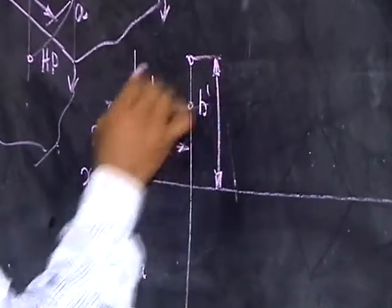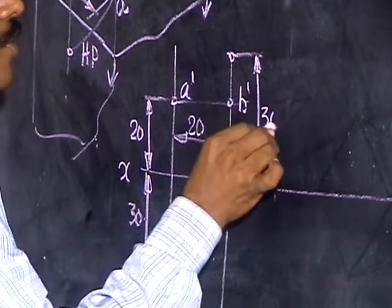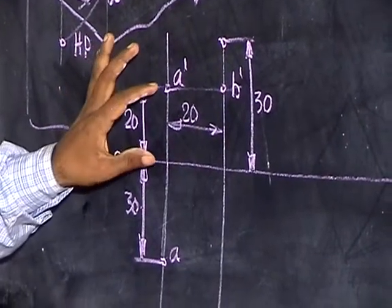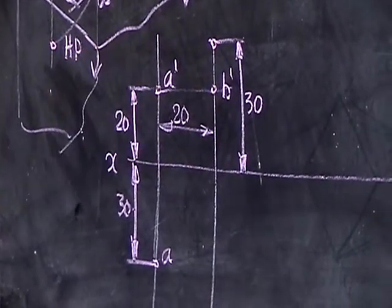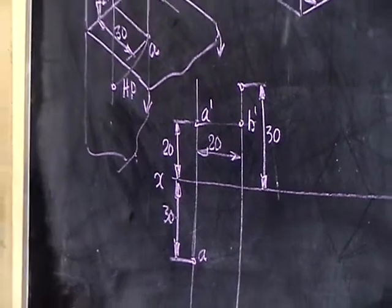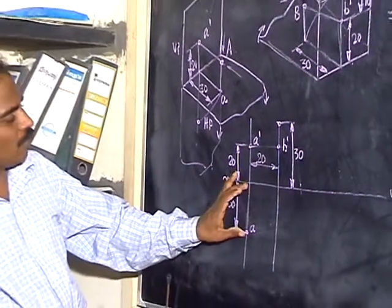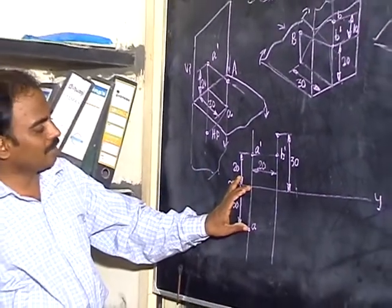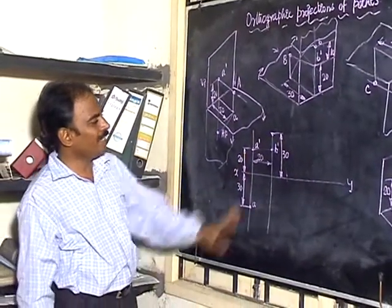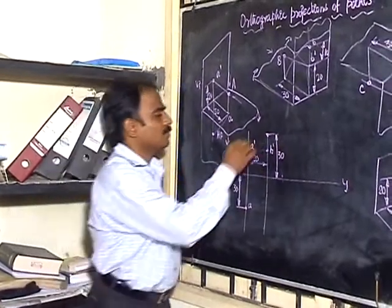Here we understand one concept: any point above HP — the front view will be above the XY line. Any point below HP — the front view will be below the XY line. A point in front of VP — the top view will be below the XY line. Behind VP — the top view will be above the XY line.